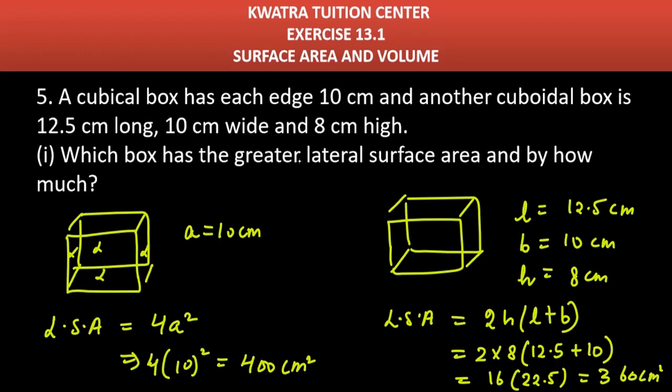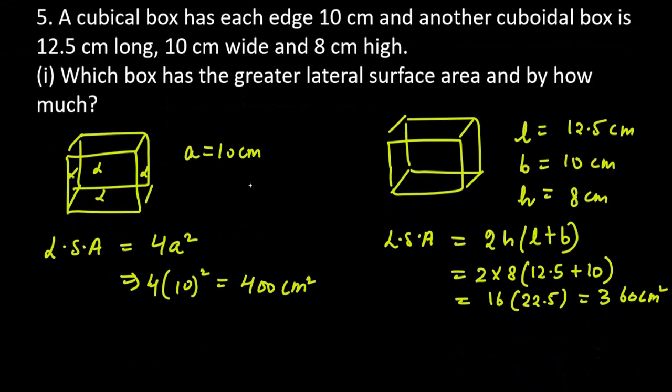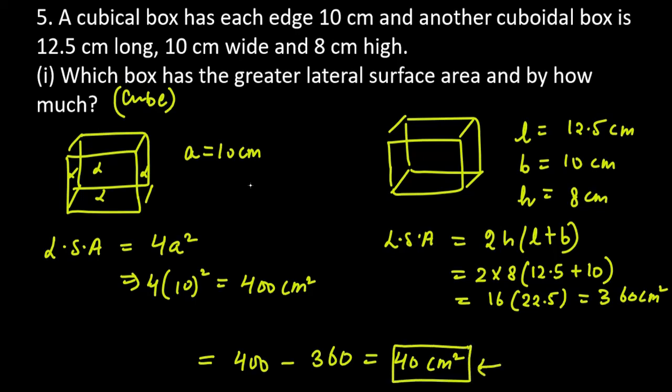So you can see lateral surface area is greater of cube. Cube's lateral surface area is greater and by how much? To find the answer you have to subtract LSA of cube and LSA of cuboid. It will give you 40 cm², so by this much it is greater - 40 cm².